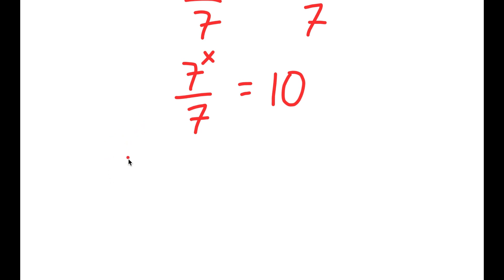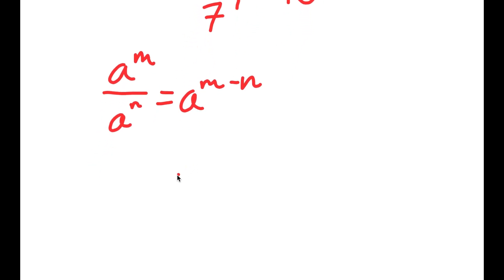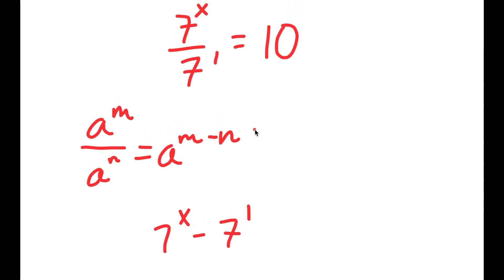If I have something in the form a to the power of m over a to the power of n, this is equal to a to the power of m minus n. So 7 to the power of x over 7 — 7 is the same thing as 7 to the power of 1 — so I have 7 to the power of x over 7 to the power of 1, and that equals 7 to the power of x minus 1, which is equal to 10.